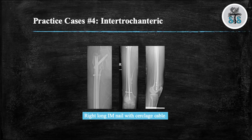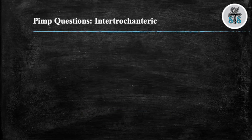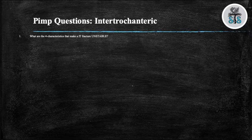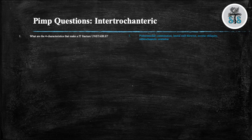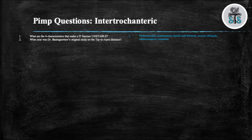Let's finish off our discussion with some pimp questions. Question 1: What are the four characteristics that make an IT fracture unstable? Posterior medial comminution, lateral wall blowout, reverse obliquity, and subtrochanteric extension. Question 2: What year was Dr. Baumgartner's original study on the tip-to-apex distance? 1995.